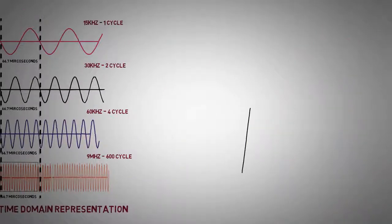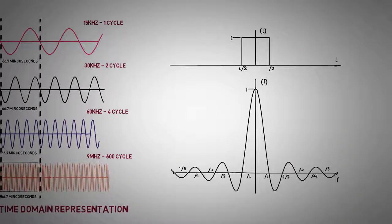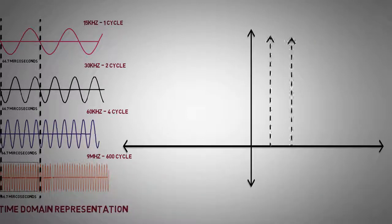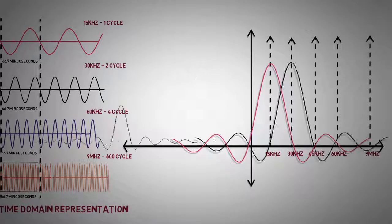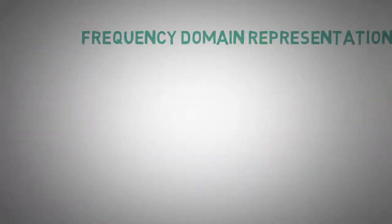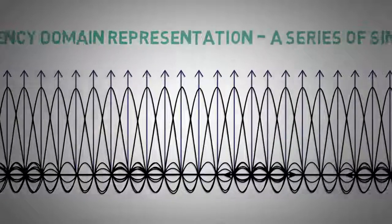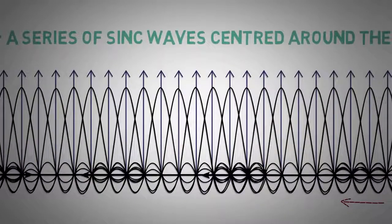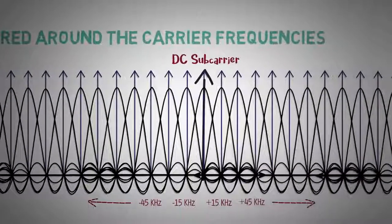As we know that a rectangular function can be represented in frequency domain as a sync function which is centered around DC. When multiplying a signal to a carrier frequency in time domain, signal will be shifted in frequency domain by the same amount of carrier frequency. Thus we can represent these modulated sub-carriers in frequency domain as a series of sync waves centered around the carrier frequencies.